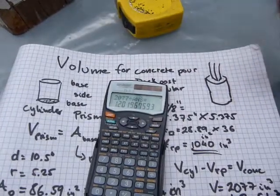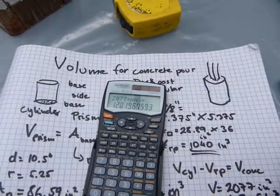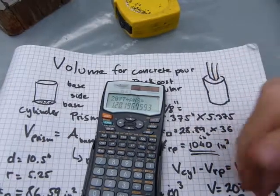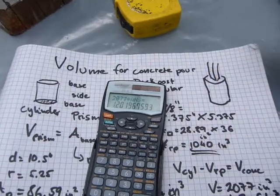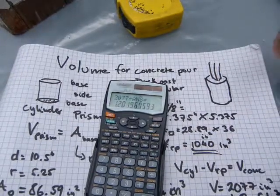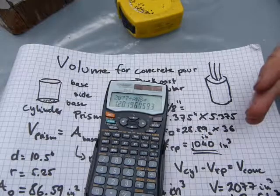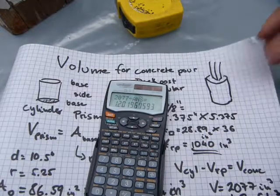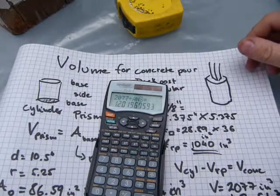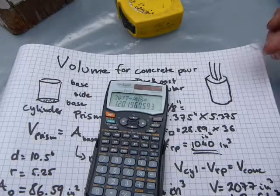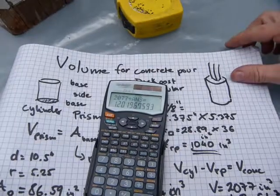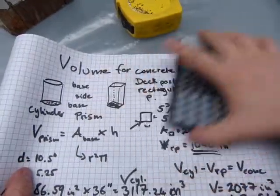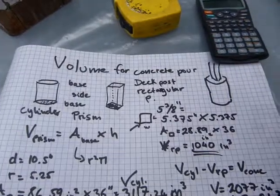2.4 cubic feet was the concrete needed for the deck pour that we started underneath that carport. From here, once you have a final result of 2.4 cubic feet, you can see how much concrete is sold in every bag and figure out how many bags of concrete you will need — and that's another calculation.